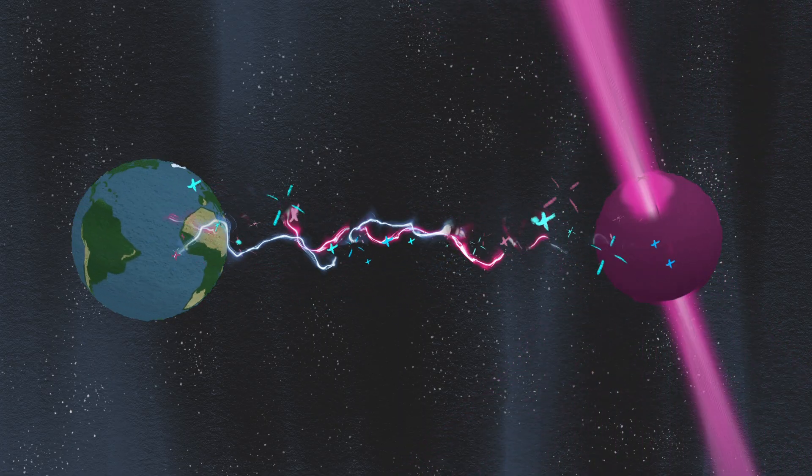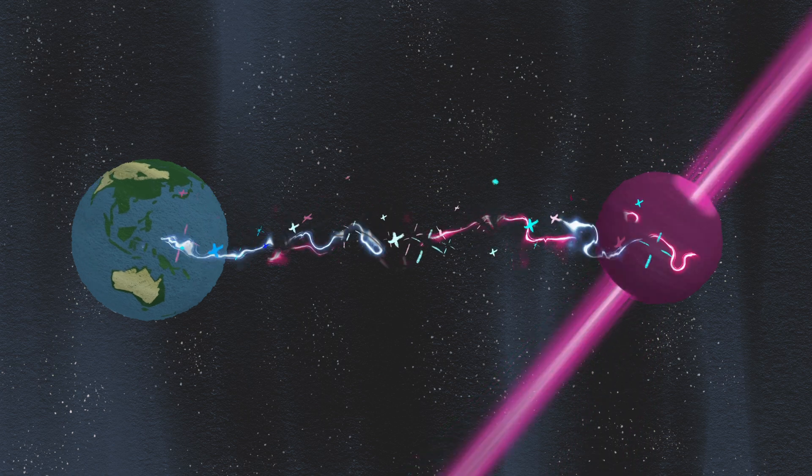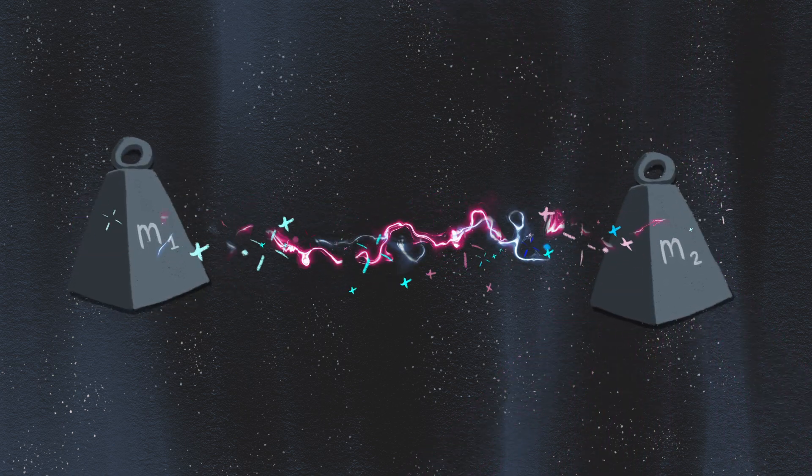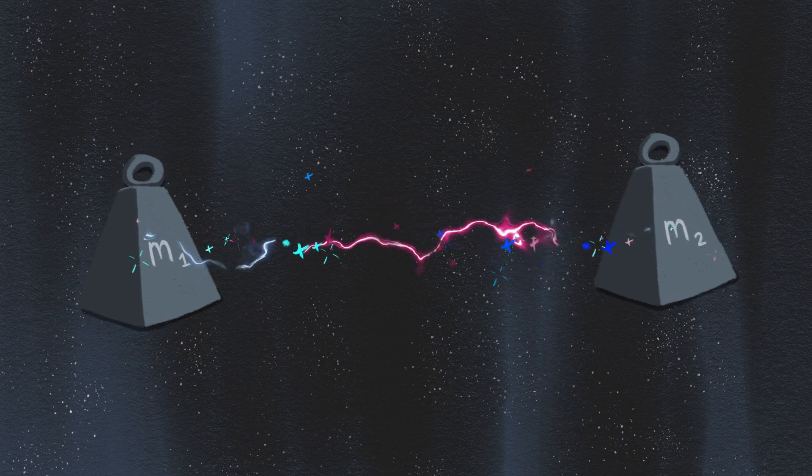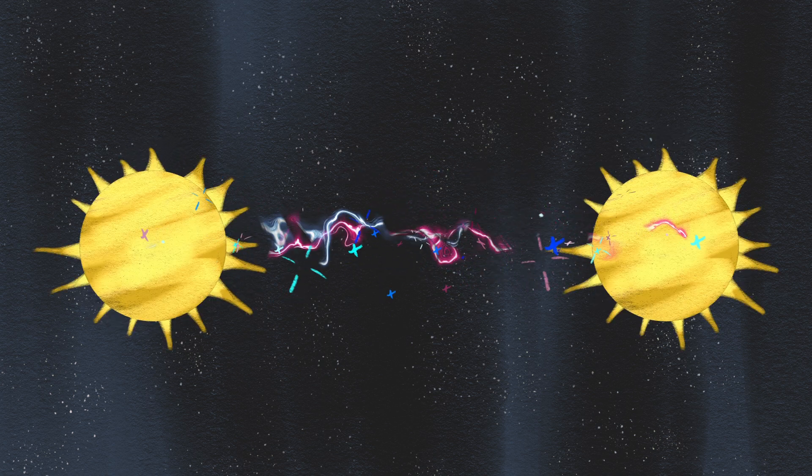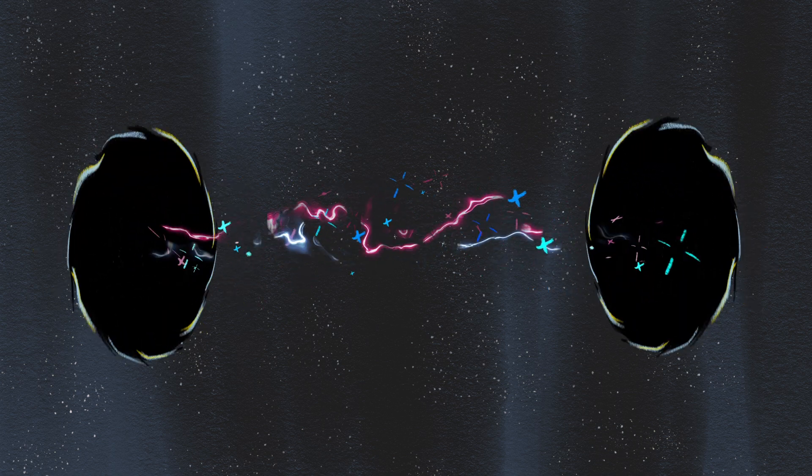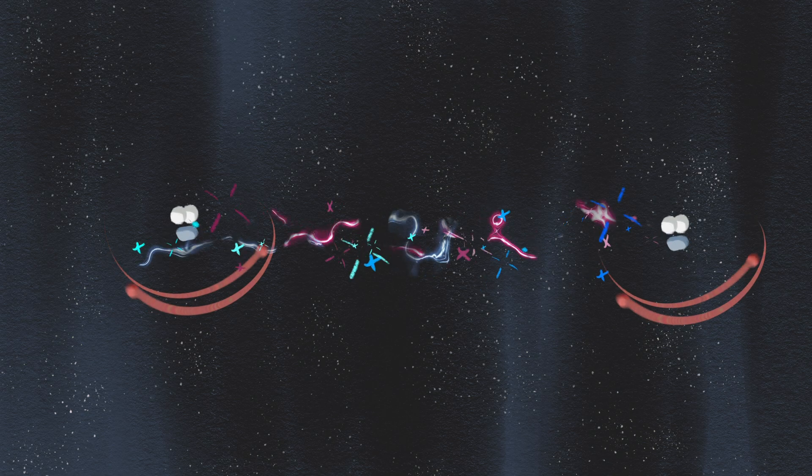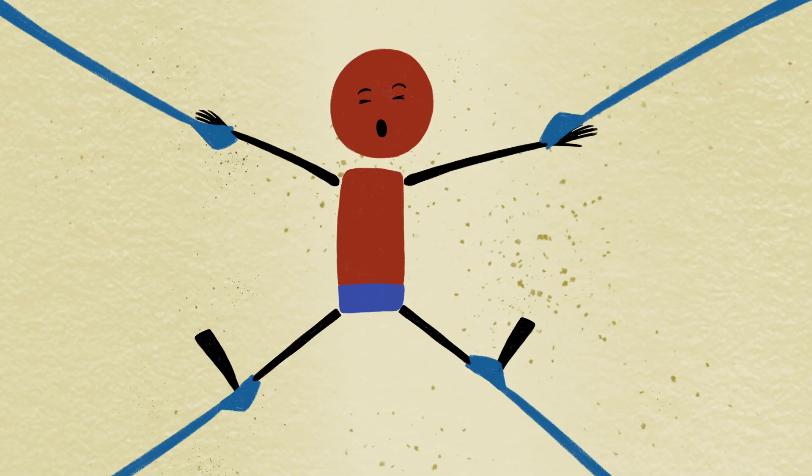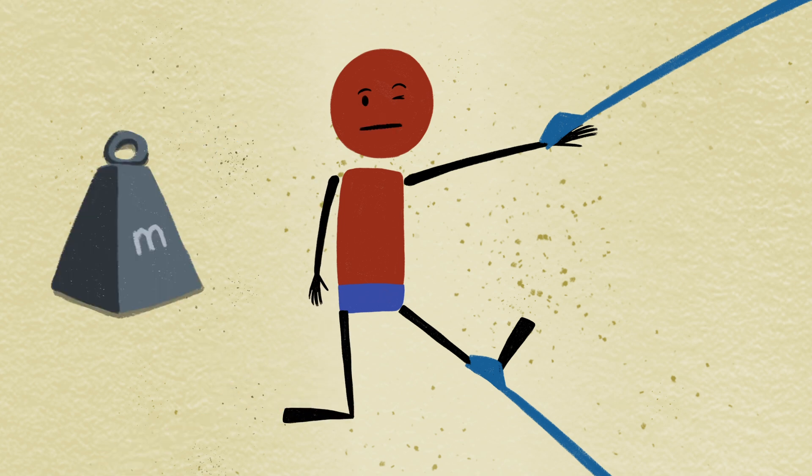Gravity is the attractive force between two objects with mass—any two objects with mass—which means that every object in the universe attracts every other object. Every star, black hole, human being, smartphone, and atom are all constantly pulling on each other. So why don't we feel pulled in billions of different directions? Two reasons—mass and distance.